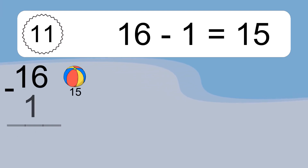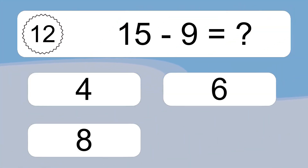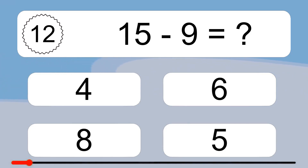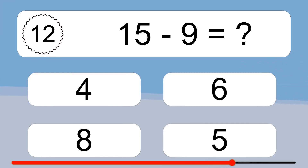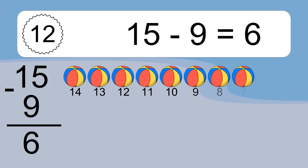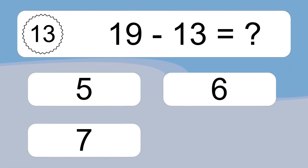Sixteen minus one equals what? Sixteen minus one equals fifteen. Let's count it: 15. Fifteen minus nine equals what? Fifteen minus nine equals six. Let's count it: 14, 13, 12, 11, 10, 9, 8, 7, 6.